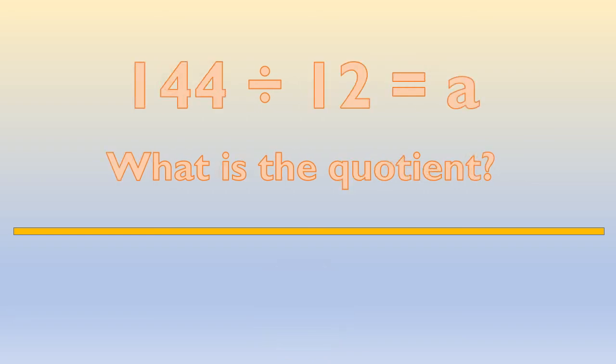Let's do another example. Look at this division equation. There is also a variable there. It is representing the number that stands for the quotient. What is the quotient? Yes, if you said 12, you are correct. Excellent job.